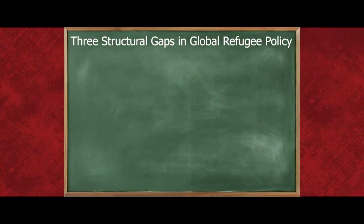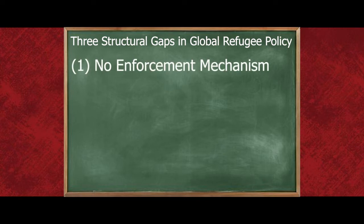Unfortunately, these legal instruments and other international legal instruments that accord rights to refugees are somewhat limited in scope. This has led to a series of structural gaps in the global refugee protection regime. Three gaps are worthy of particular attention. First, there is no international mechanism to enforce the rights of refugees. Refugees are largely reliant on national governments to recognize them as refugees and to uphold their rights.